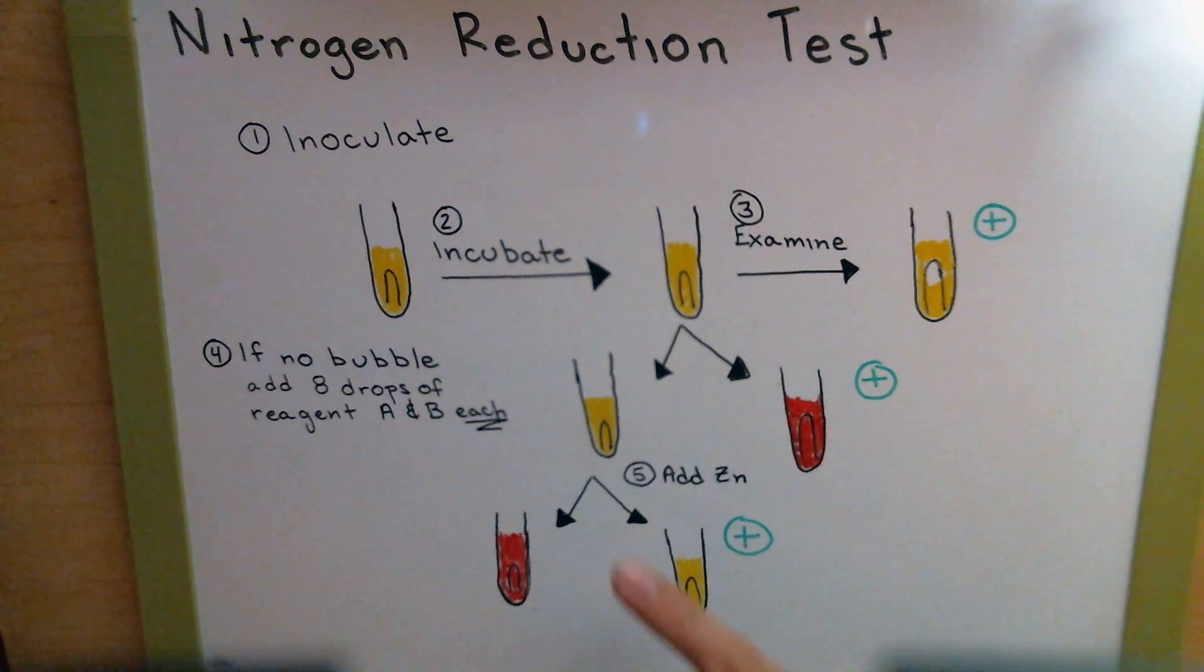And lastly, if we don't have a red color after we add reagents A and B, we're going to take our sample, and we're going to add zinc. When we add zinc, one of two things will happen. Option one is that we get a red color, meaning that in the presence of zinc, nitrate was reduced to nitrite. But that wasn't done by the microbe. It had to be done in the presence of zinc. The microbe didn't do that on its own.